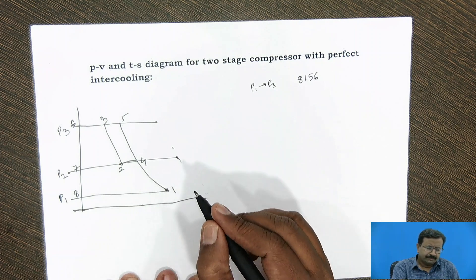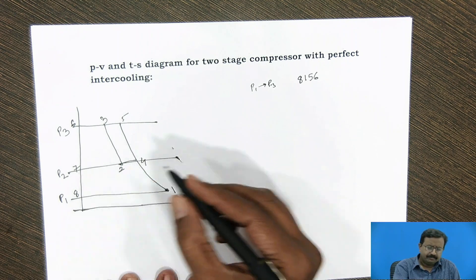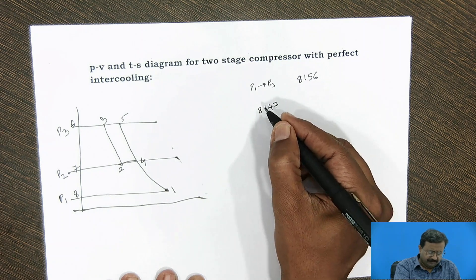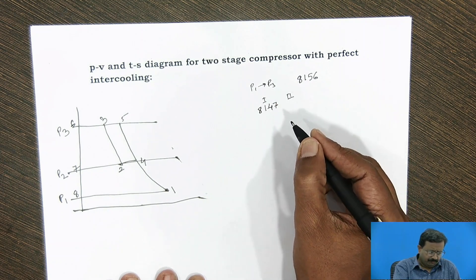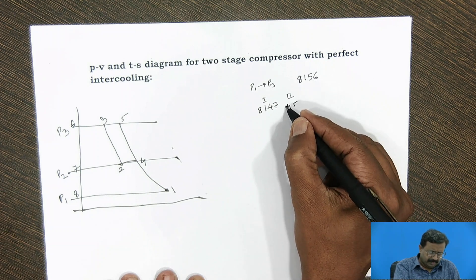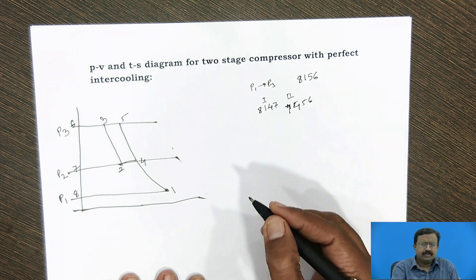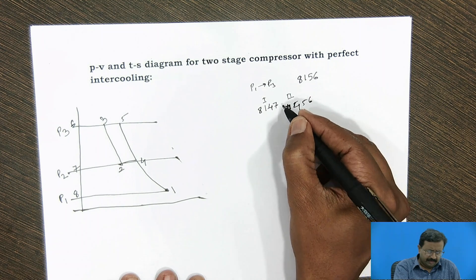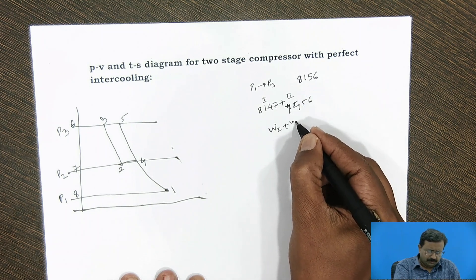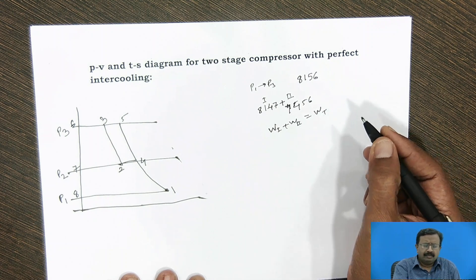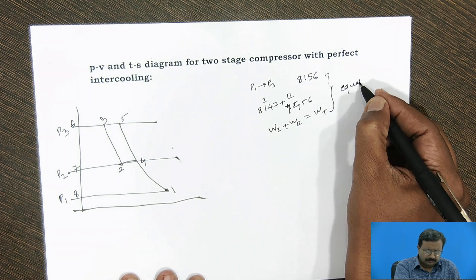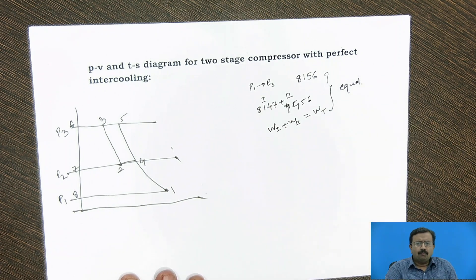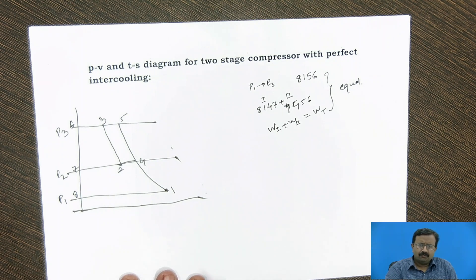Instead, if we go for two-stage compression, the first stage will be 8, 1, 4, 7, and the second stage will be 7, 4, 5, 6. If we take these two stages together and add them — that is, work of the first stage plus work of the second stage equals total work — mathematically we find these two works are equal. Now the problem is: when we use two compressors with two connecting rods and two pistons and cylinders, and if we are not getting any benefit, then why go for multi-staging? That is why intercooling is a must for a multi-stage compressor.